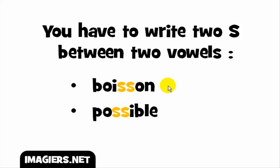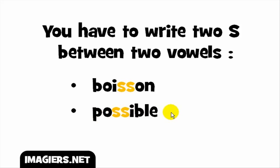You can hear that it's really the S sound — boisson. Second example: you've got the vowel O and then here you get the vowel I. So you put SS and you get the sound — possible.